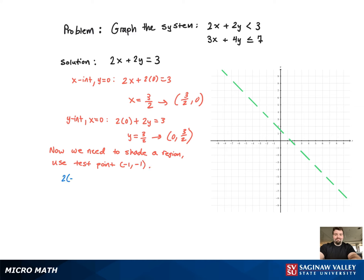And we plug it back into that inequality, and we see if we get a true or false statement. And when we plug it in, what do we get? Negative 4 less than 3, which is true. Which means we shade the region that has the point negative 1, negative 1 below the line.